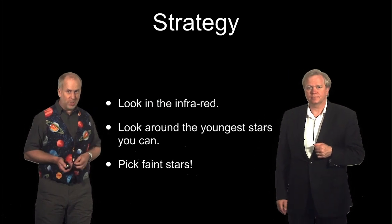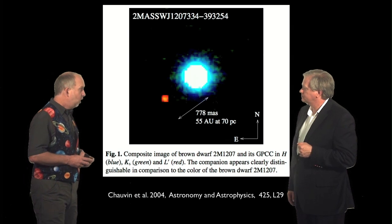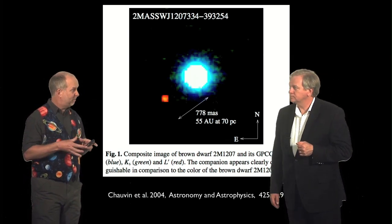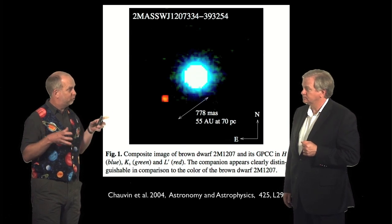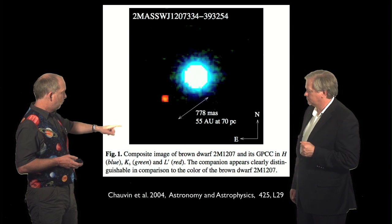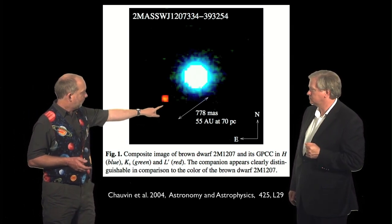Yes, so this is how we'll cheat, and indeed this is how the first direct imaging happened back in 2004. We're looking actually at a brown dwarf star, a star which is so low mass it doesn't even have nuclear fusion in the middle. It itself is just cooling down like a very big planet. And we observe in the infrared, and here we see something near it.